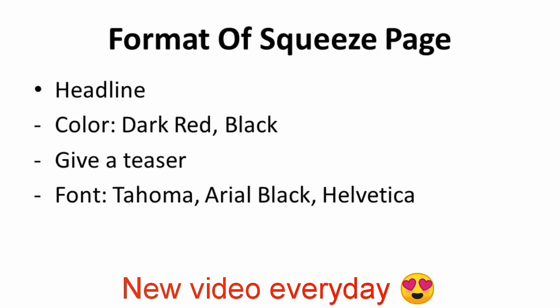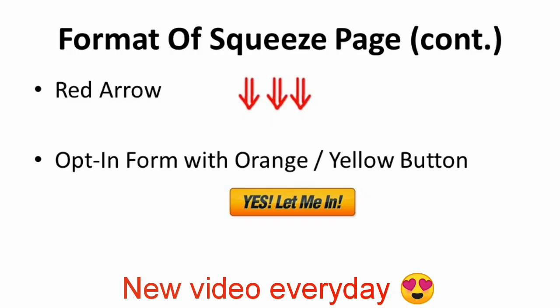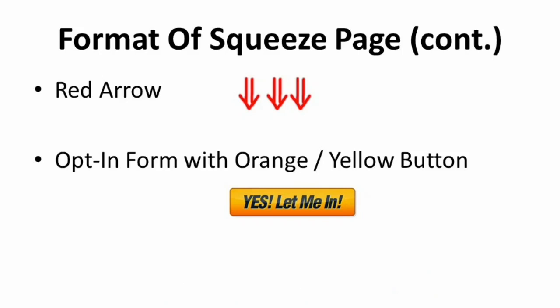The best color choice for the headline will be dark red or black, and it must be able to give a teaser of the product they're going to purchase later. I would recommend that you use the fonts Tahoma, Arial Black, and Helvetica. The big red arrow in the middle of your headline and opt-in form leads them to fill out the form — it catches the reader's attention and directs their gaze to the opt-in form, which increases the conversion rate. The opt-in form will always come with an orange or yellow button, as shown in the slide. These two colors have been tested to increase the conversion rate as well.